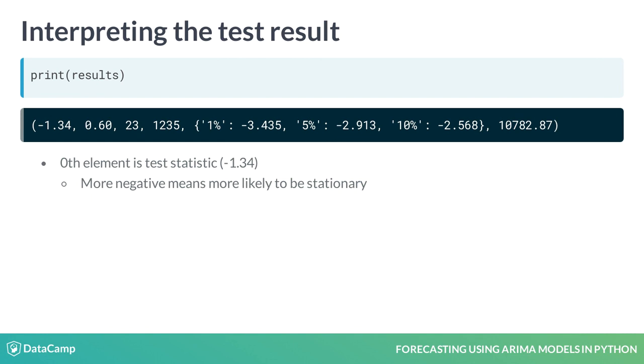The next item in the results tuple is the test p-value. Here, it is 0.6. If the p-value is smaller than 0.05, we reject the null hypothesis and assume that our time series must be stationary.